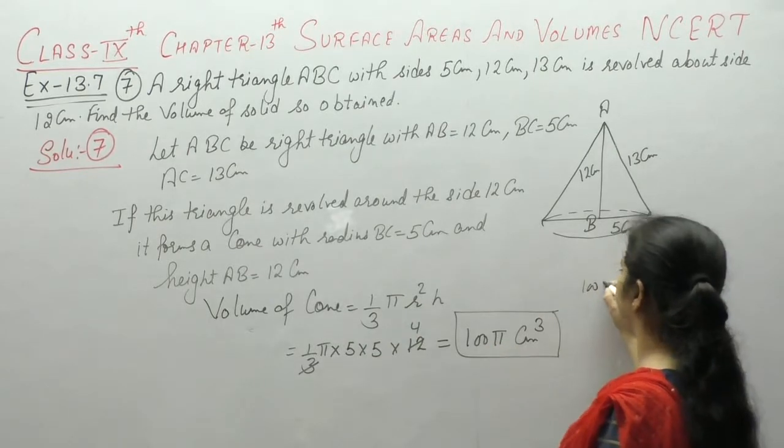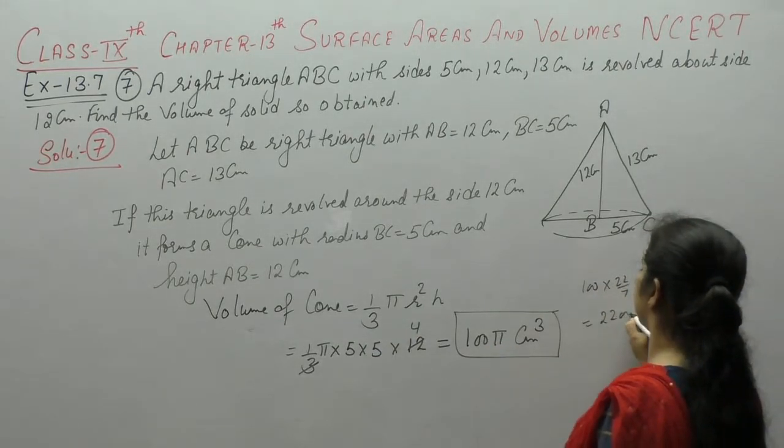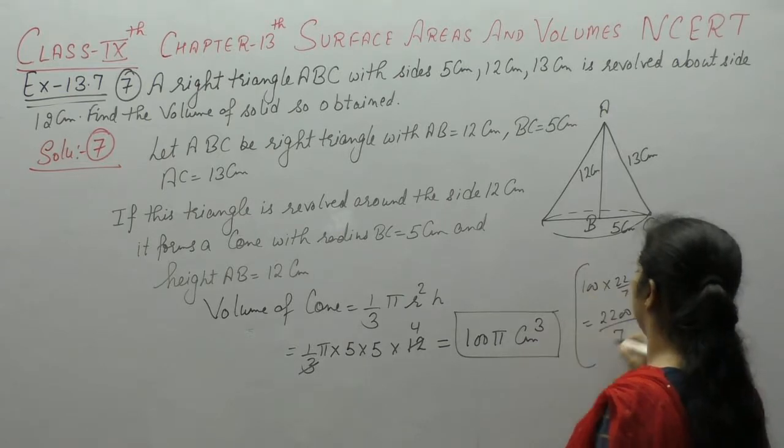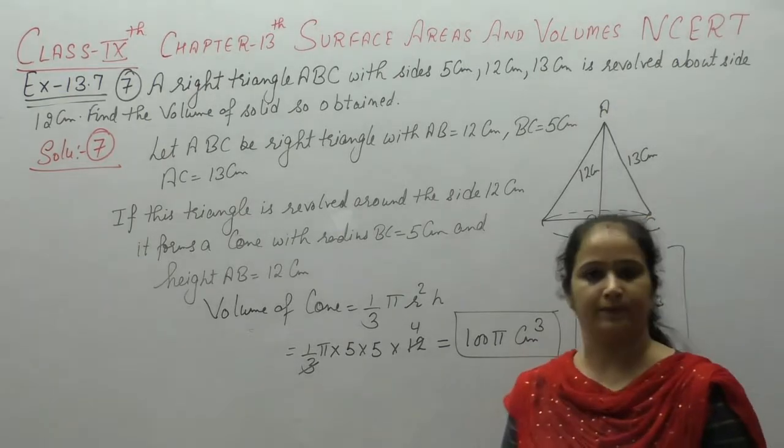Otherwise, aap chaahou to pi ki value put kar saakti ho, 22 upon 7, so 2200 upon 7 cm cube. Clear?